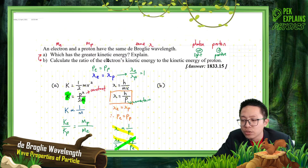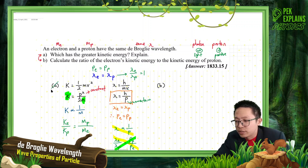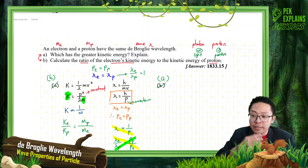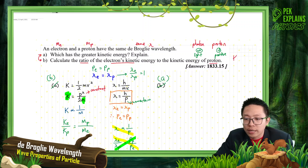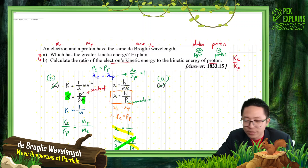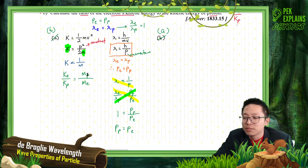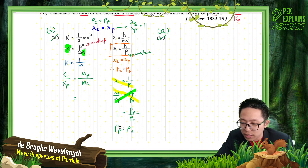The question asks for the ratio of electron kinetic energy to kinetic energy of proton. So kinetic energy of electron over kinetic energy of proton equals mass of proton over mass of electron. You can find these values in the list of constants.